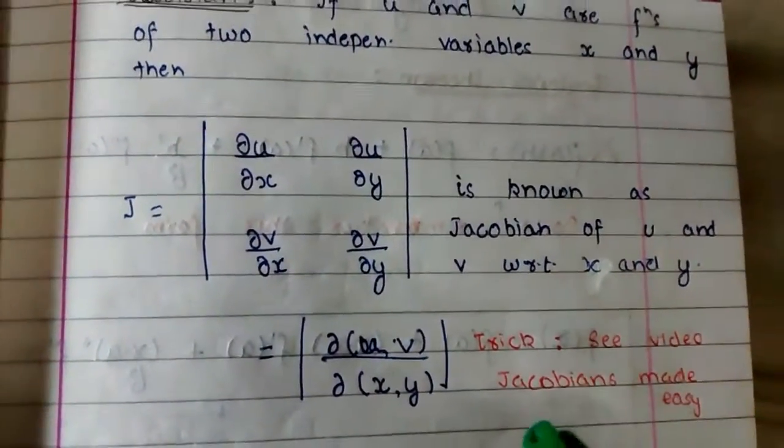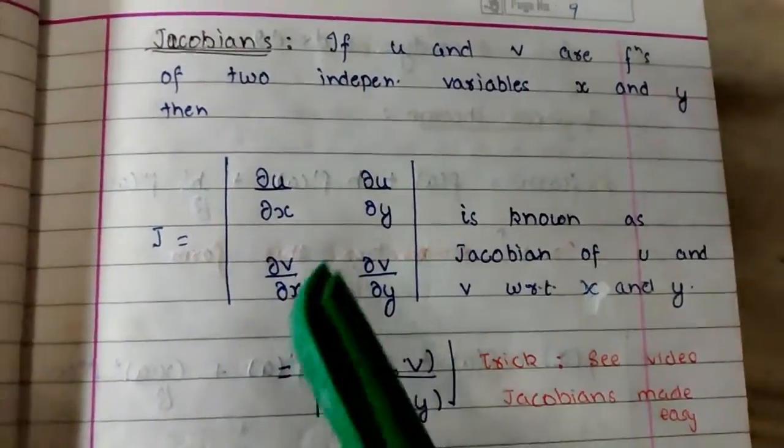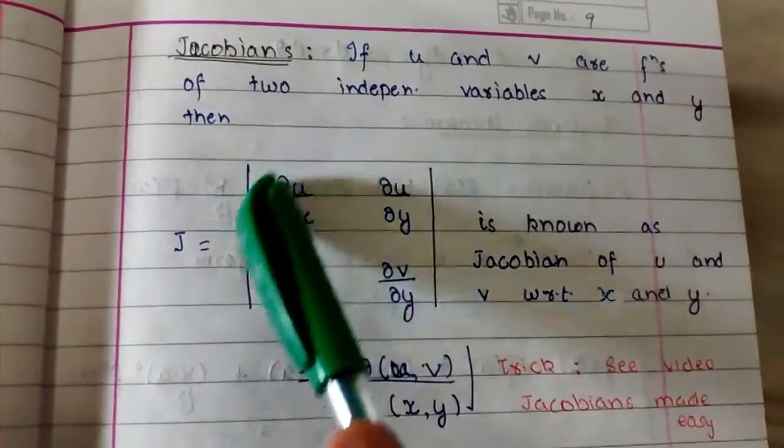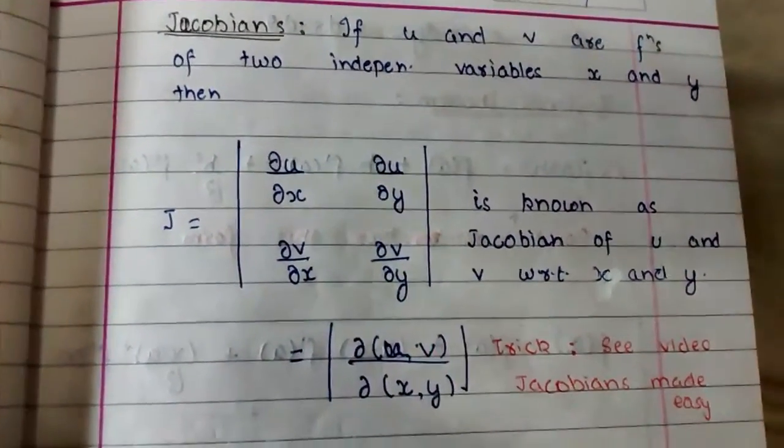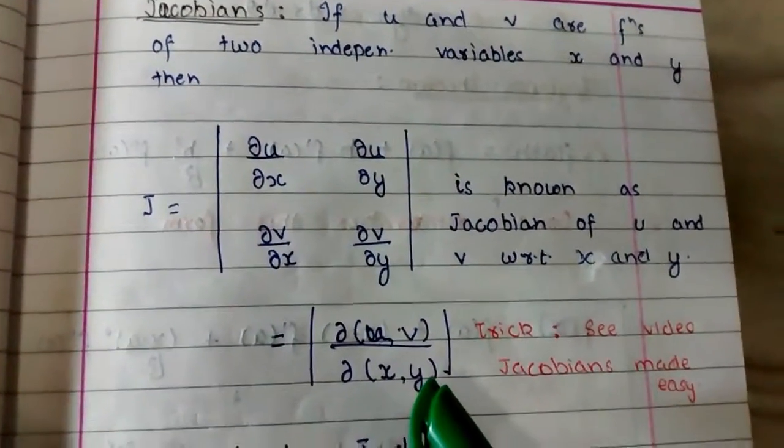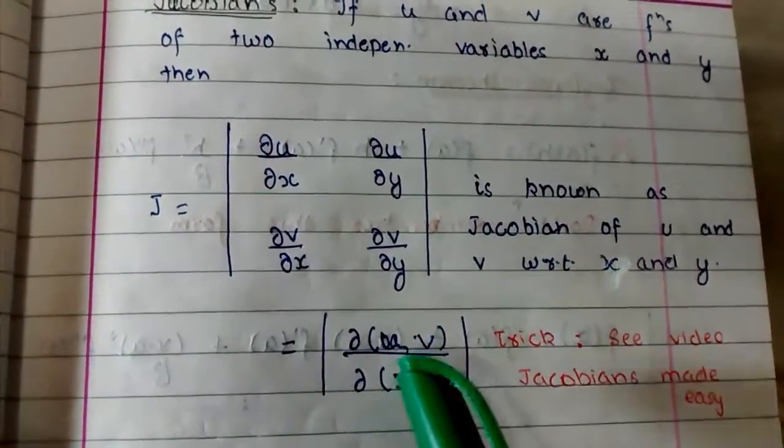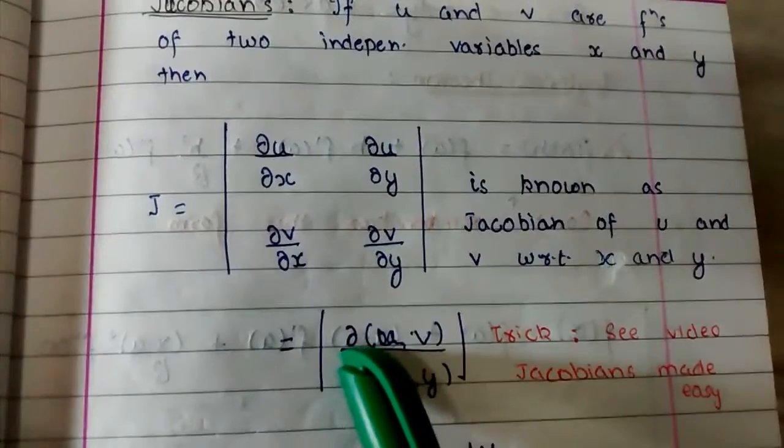This is a video which will help you learn the formula of Jacobians, which is a bit complex to learn. You will be able to learn this formula easily. See how. In the numerator of this equation you have u and v.